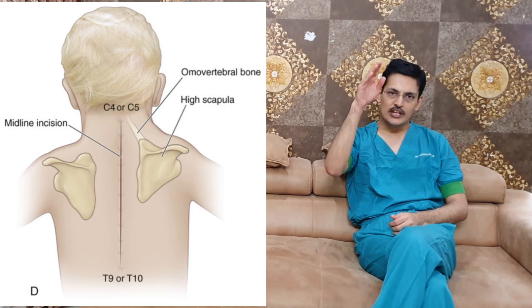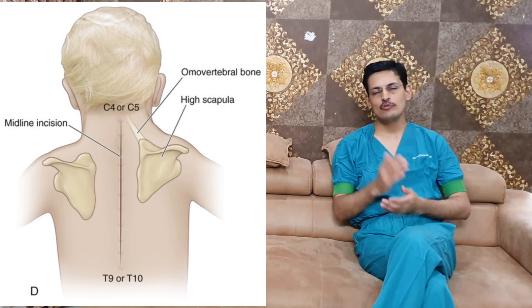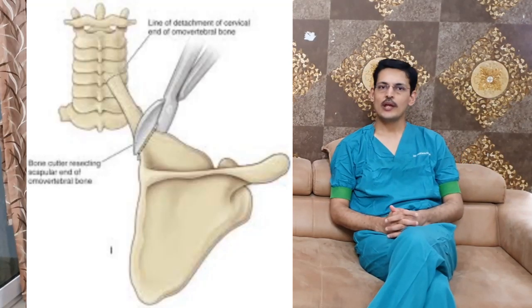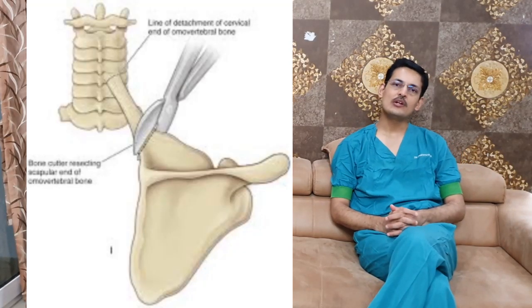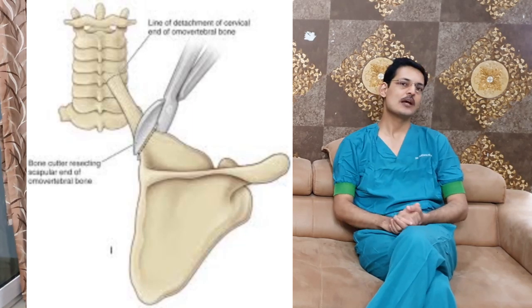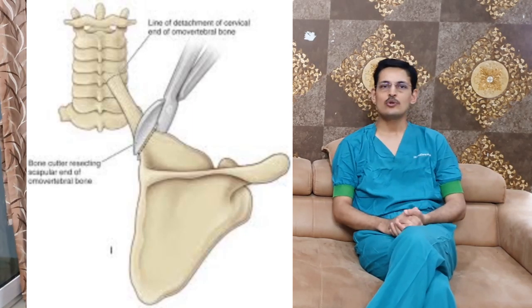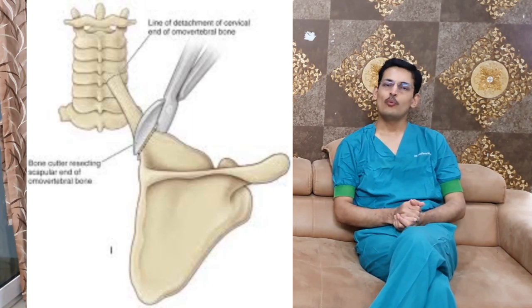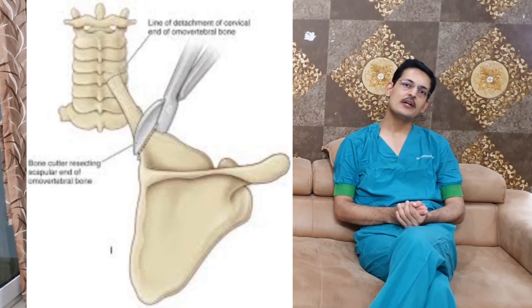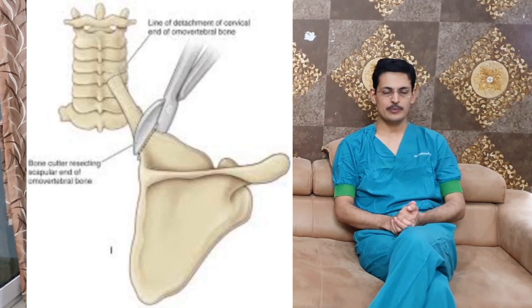In the Woodward's procedure and the modified Woodward's procedure, the release is done from the midline. It is a midline surgery where you remove the muscles from the thoracic spine — including the trapezius — and try to bring the scapula down as much as possible. You may need to release the superior medial angle of the scapula, and it is recommended to remove the omovertebral bone and omovertebral bands if present.